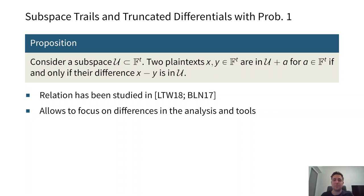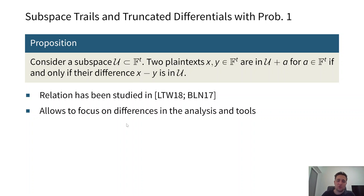What is the relation between truncated differentials with probability 1 and subspace trails? We essentially have a relation which has already been studied in the literature, and it allows us to focus on differences rather than two different inputs. This simplifies a lot of our results, because we focus purely on subspace trails in both the analysis and our tools.